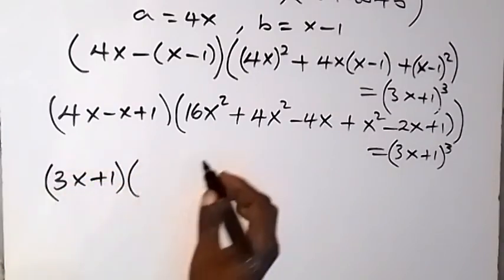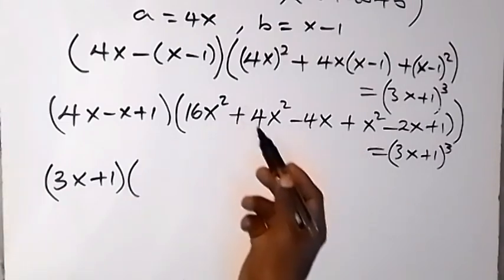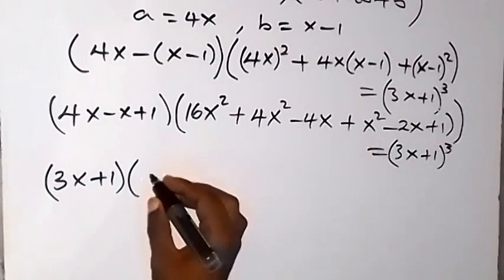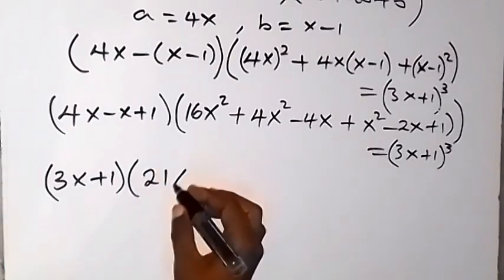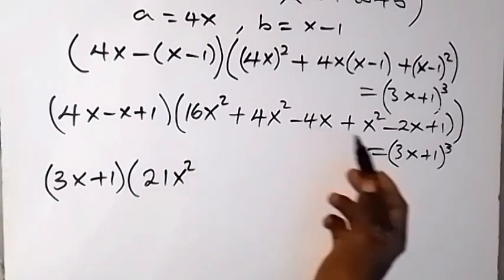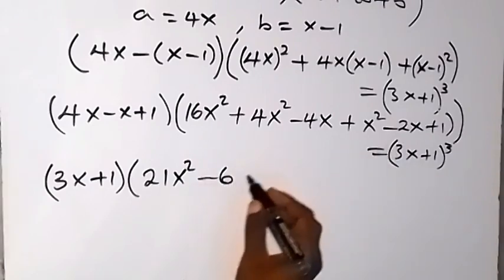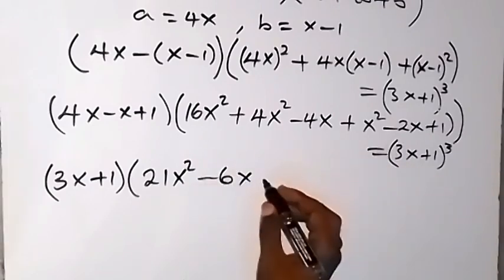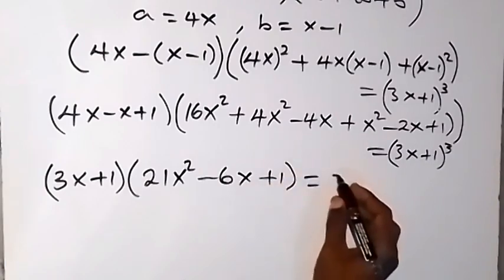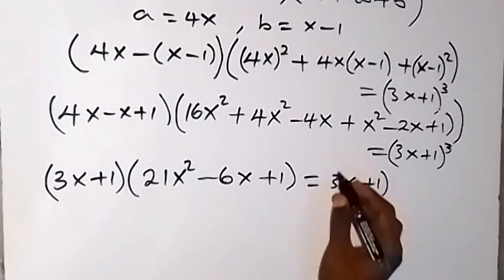Adding like terms in the other bracket: 16x² plus 4x² plus x² gives 21x². Then the x terms: minus 4x minus 2x gives minus 6x. Plus 1. So we have (3x+1)(21x² - 6x + 1) equal to (3x+1)³.